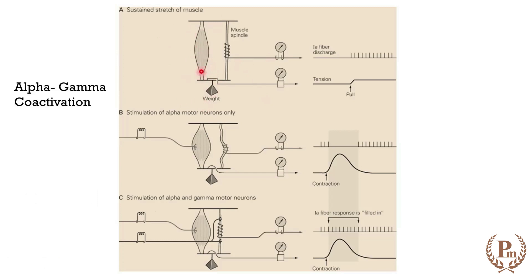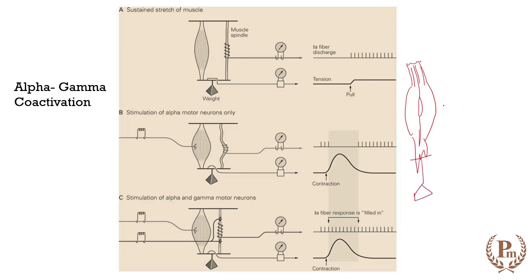Let me take a pen and show you. Once we give the weight, there is stretching of the muscles. Here is my muscle belly — it has the extrafusal fibers. Then there is the muscle spindle, which is attached to the intrafusal fibers. Whenever you tie a weight here, you are actually stretching the muscle.